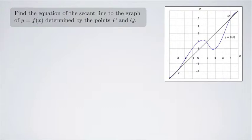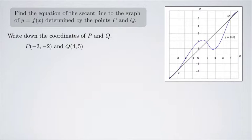The first thing we need to do is write down the coordinates of P and Q. So P looks to be (-3, -2) and Q looks like (4, 5).